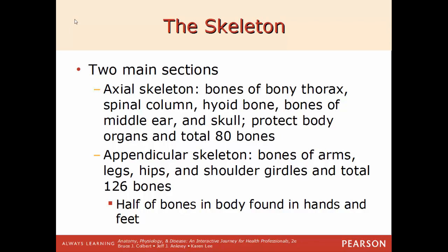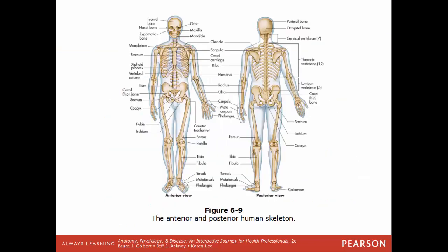Half of the bones in your body are found just within your hands and your feet. The axial skeleton includes the skull, the bones of the middle ear, the ossicles, the hyoid bone just under the chin, the sternum, the ribcage, and the vertebral column. Everything else — the arms, shoulder girdles, hips, and legs — will be the appendicular skeleton.